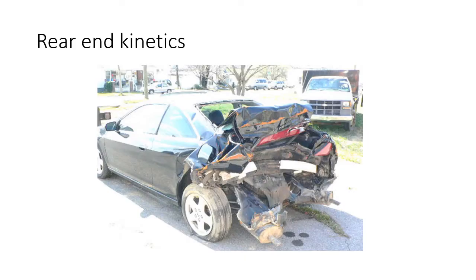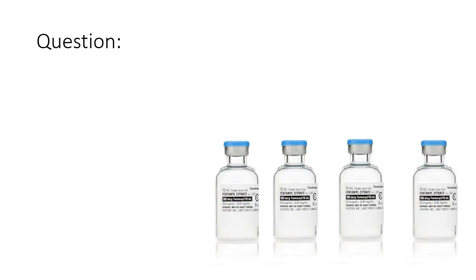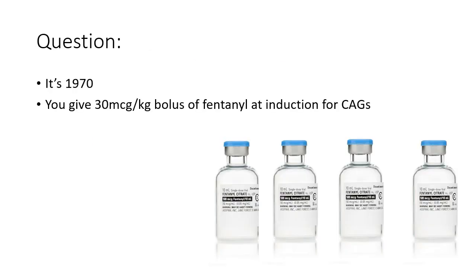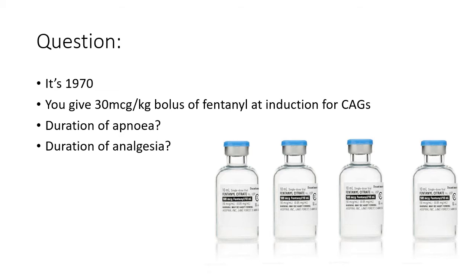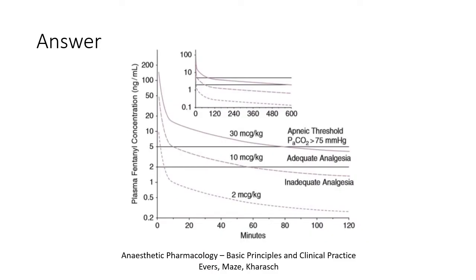Let's talk about some rear-end kinetics. Let's now imagine that it's 1970, and you're about to anaesthetise a patient for cardiac surgery. You crack open four of these bad boys, and you wonder to yourself: how long will they last for? How long will it stop the patient from breathing? How long will it provide analgesia for? The answer is here in this graph from the pharmacology textbook by Evers and Mays, specifically the chapter on opioid kinetics.